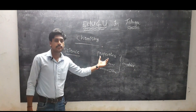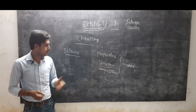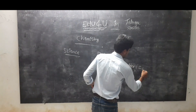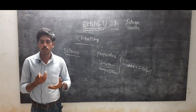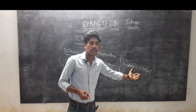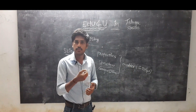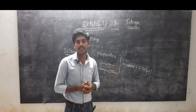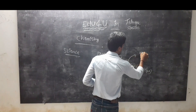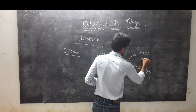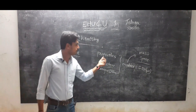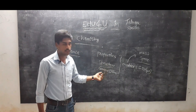First of all, what is matter? Matter is anything that has some mass and occupies some space — that is known as matter. Chemistry is the branch of science in which we study the properties, structure and composition of matter.